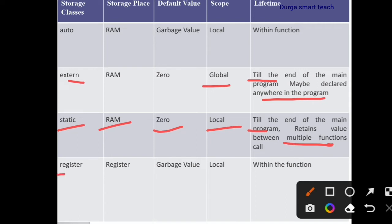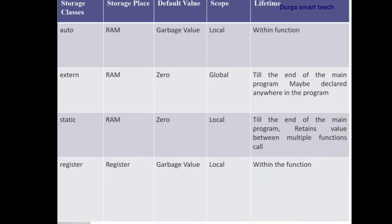The last one is register. The storage space is the CPU registers — not the main memory. The default value is garbage value, and the scope is local, only within the function. This table is very important for storage classes.